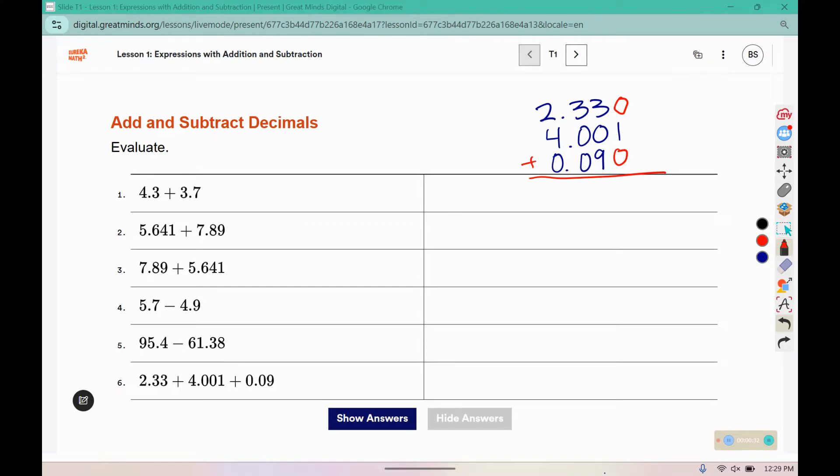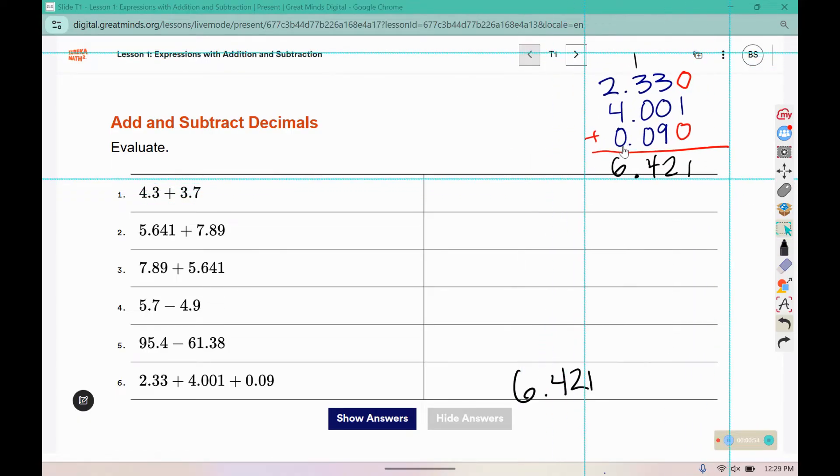This is an addition problem. Zero plus one plus zero is one, three plus zero plus nine is twelve. One plus three plus zero plus zero is four. Keep your decimal spot lined up. Two plus four is six. Continue with problems one through five, either adding or subtracting and paying special attention to that decimal spot.